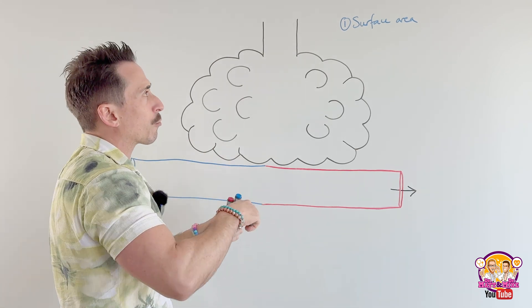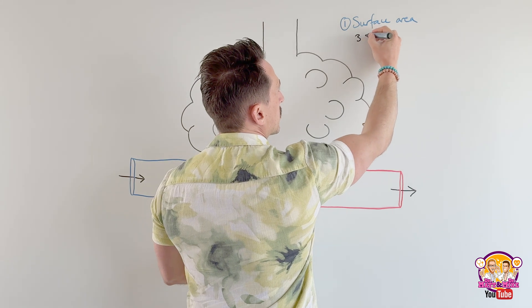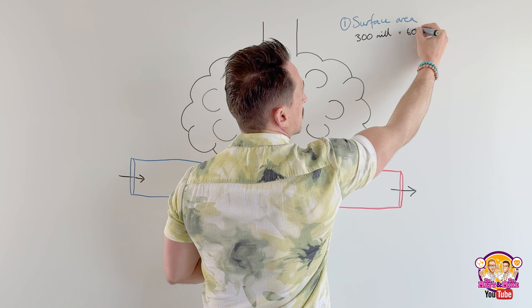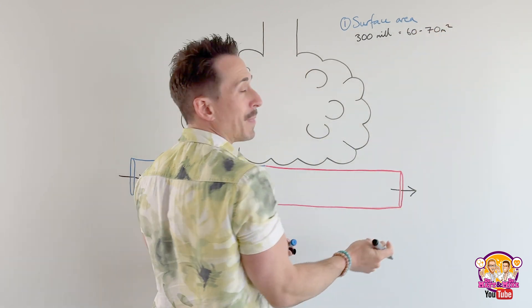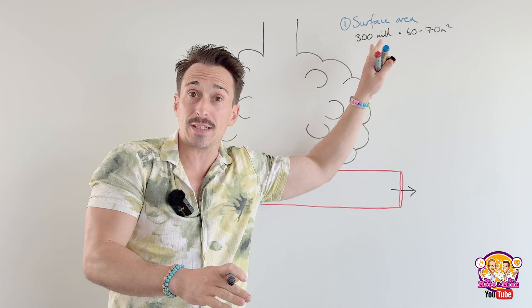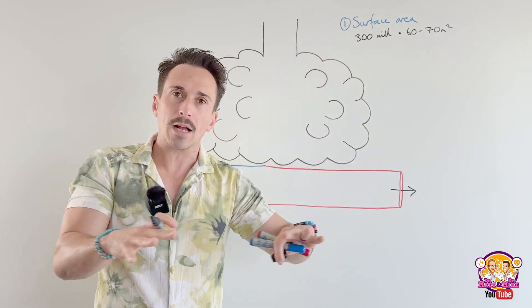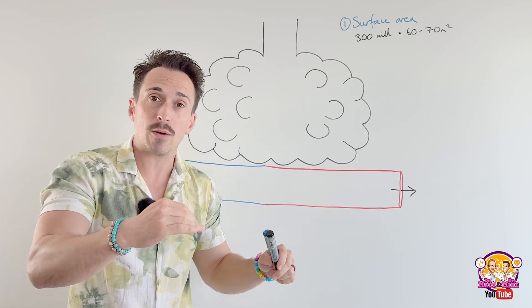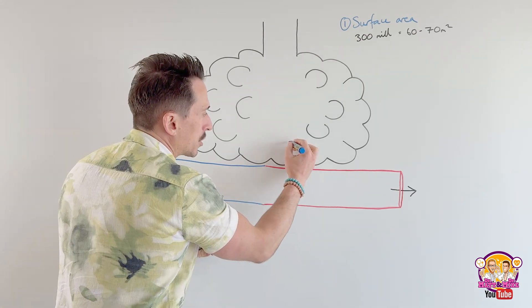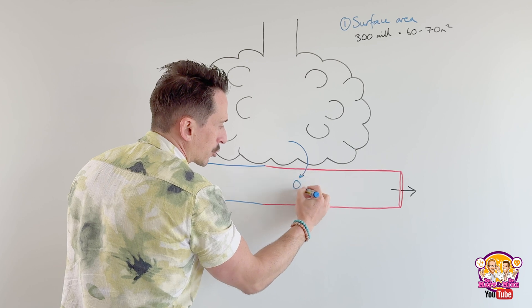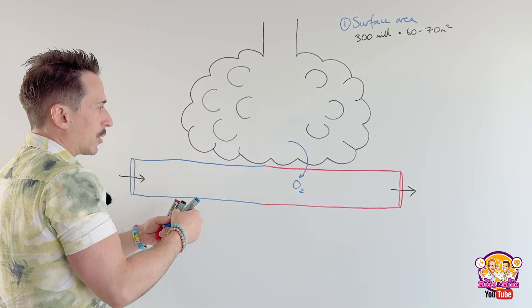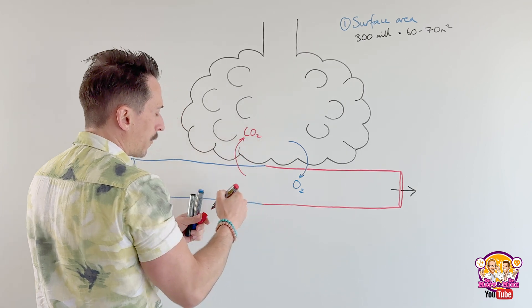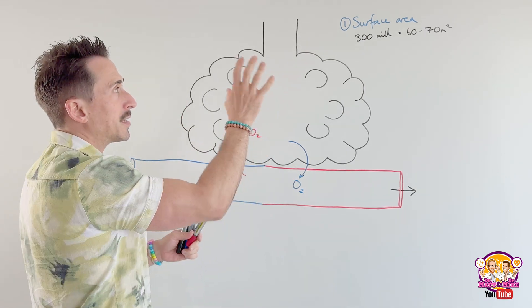If I were to take all 300 to 350 million and open them up and lay them out on the floor, it ends up being around about 60 to 70 square meters. So that's nearly the half size of a tennis court. It's a very large surface area, which means there's a lot of area for the gas to be able to jump. Let's say if it's oxygen, for the oxygen to jump into the bloodstream or for the carbon dioxide to jump out. Large surface area for this exchange to occur. Now this is brilliant.